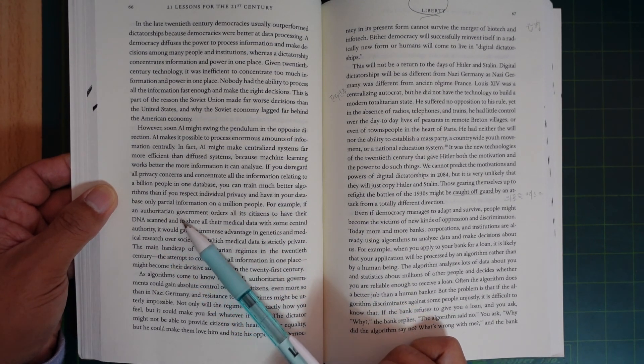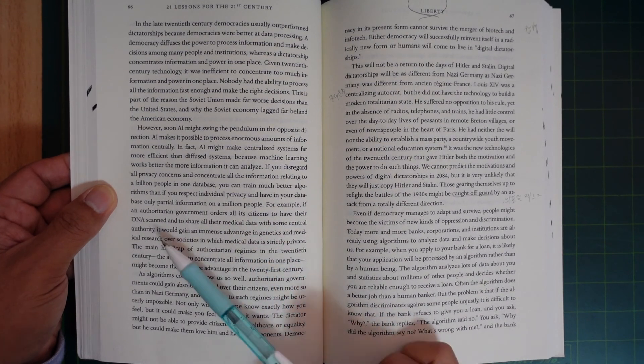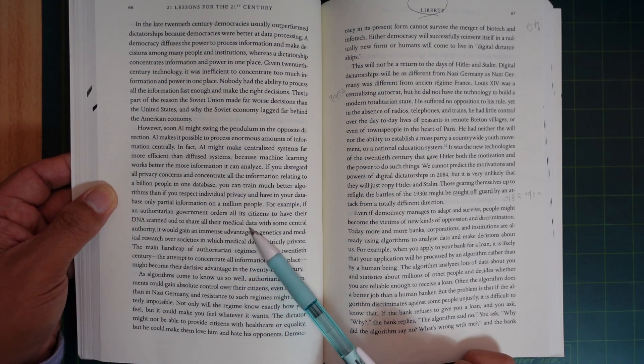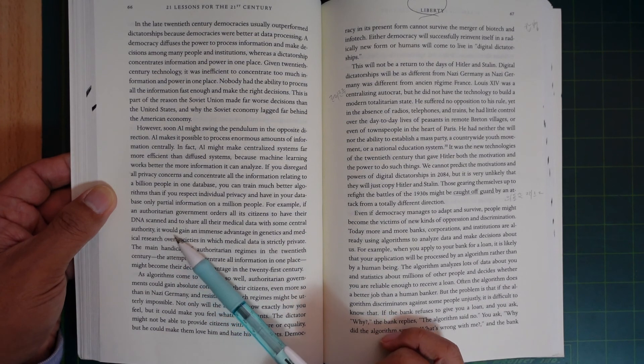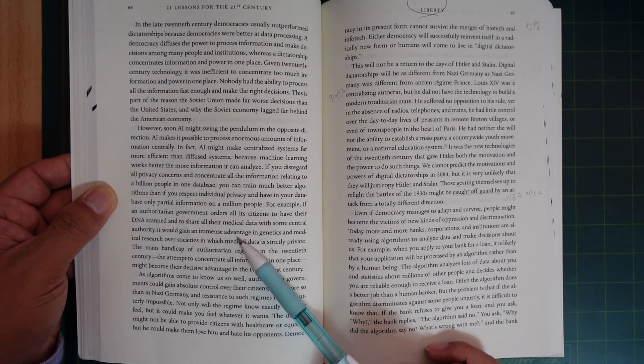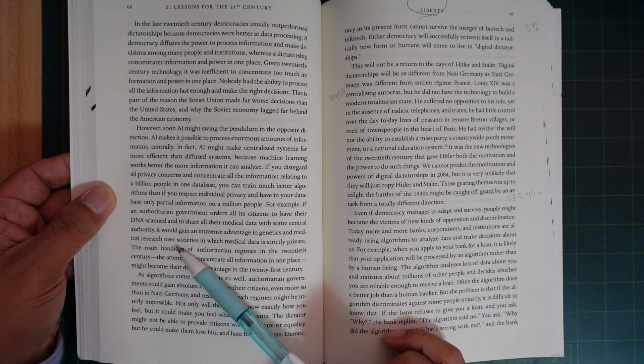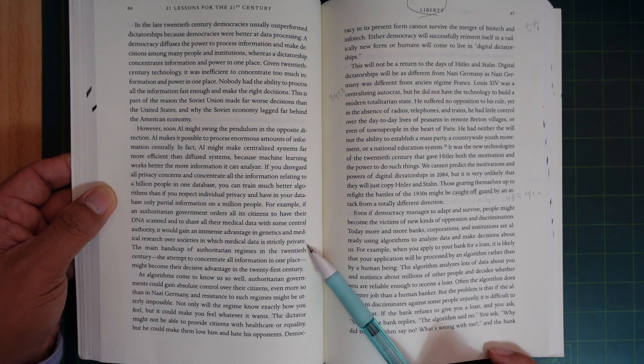For example, if an authoritarian government orders all its citizens to have their DNA scanned and to share all their medical data with some central authority, it would gain an immense advantage in genetics and medical research over a society in which medical data is strictly private.